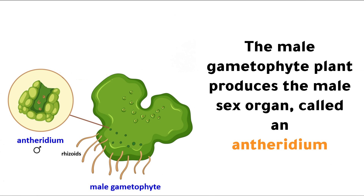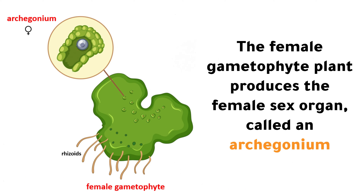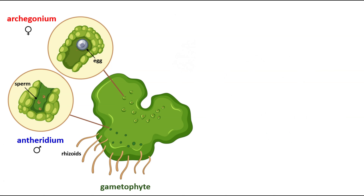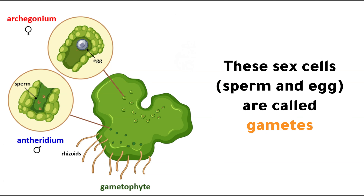The male gametophyte plant produces the male sex organ called an antheridium. The female gametophyte plant produces the female sex organ called an archegonium. Antheridium produces sperm, and archegonium produces a single egg. These sex cells, the sperm and egg, are called gametes.